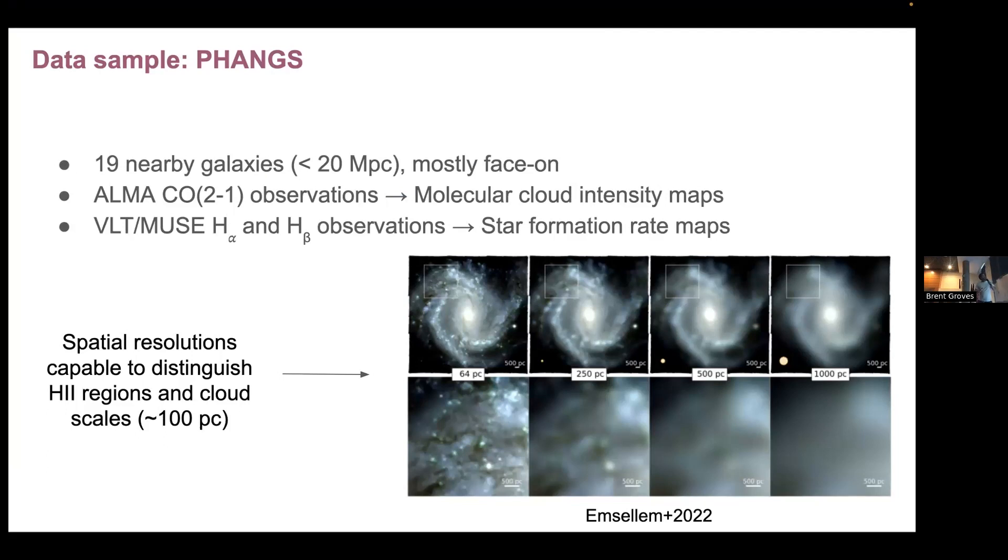Our parameters of interest were the molecular cloud intensity and the molecular cloud gas, and this was thanks to ALMA. ALMA observed the CO(2-1) line and also another parameter of interest was the star formation rate thanks to MUSE that observed the H-alpha and H-beta flux and line emissions.